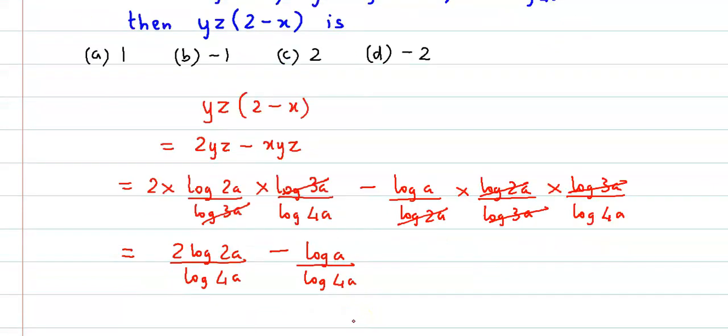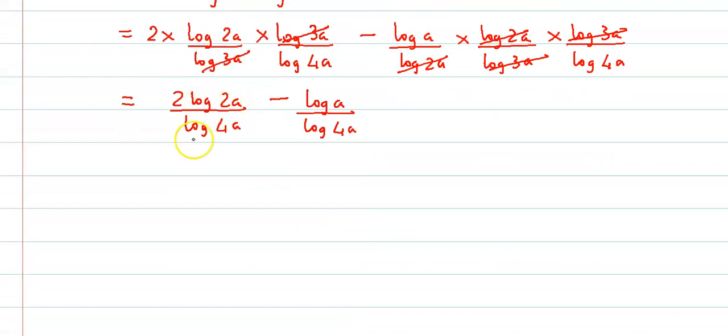So here we have log a upon log 4a. Now the denominator is the same, so we simplify the numerator. Taking 2 to the top, this becomes log of 2a squared minus log a, and below we have common log of 4a.